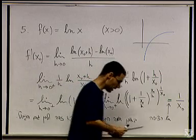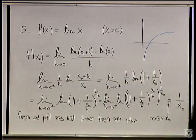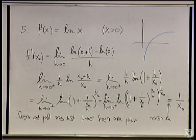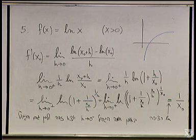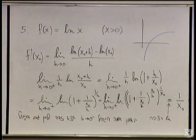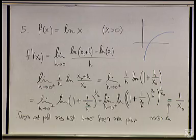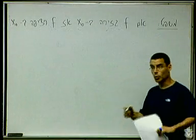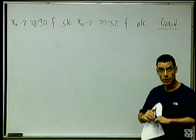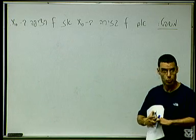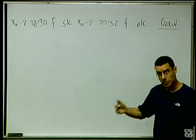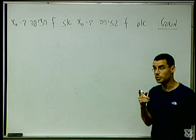אי אפשר להבליע את זה ולהגיד כש-H הולך ל-0, כי זה לא נכון. אז הנה המשפט הראשון שלנו בענייני נגזרות. משפט: אם f גזירה ב-x0, אז f רציפה ב-x0. כלומר, התכונה של להיות גזירה שנמדדת על ידי קיום איזשהו גבול, מבטיחה רציפות שגם היא נמדדת על ידי קיום איזשהו גבול. אבל זה לא אותו גבול.